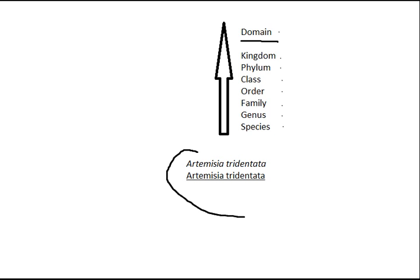Down here I've written two different names, and this is actually how we classify different organisms. We use the genus and then we use the species, which are the two most specific classifications. The Artemisia here is the genus, and the Tridenta here is the species.